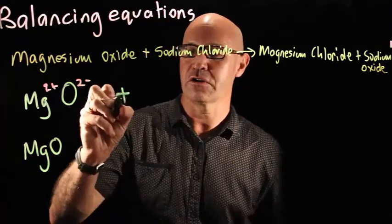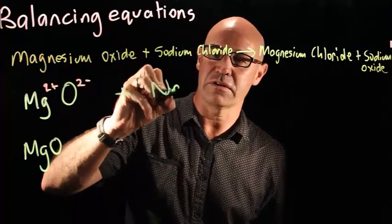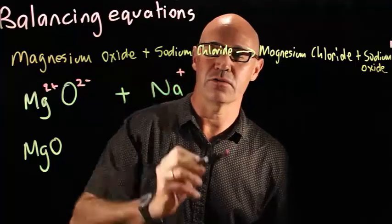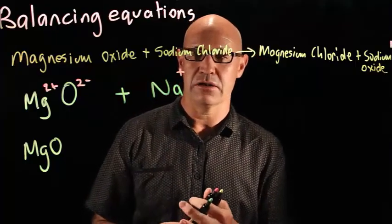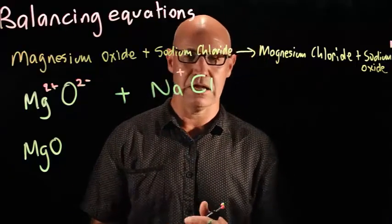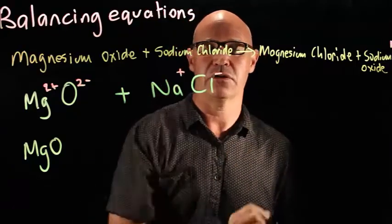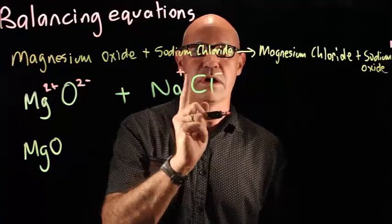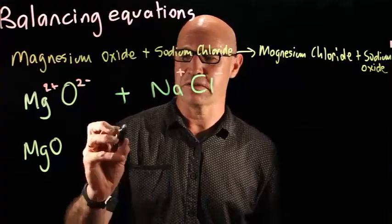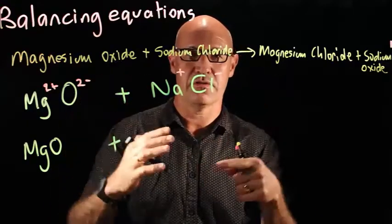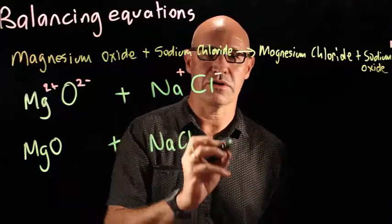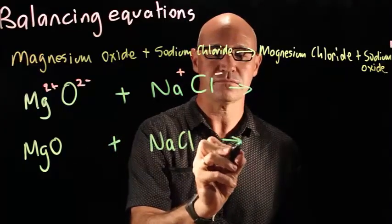Next we've got sodium chloride. Sodium is in group 1, so it's got a charge of 1+ or just plus, and chloride is in group 7 and has got a charge of 1- or just minus. So we can go ahead and put that one down because once you cross it over it just cancels out and we've just got NaCl. That's all pretty straightforward so far.